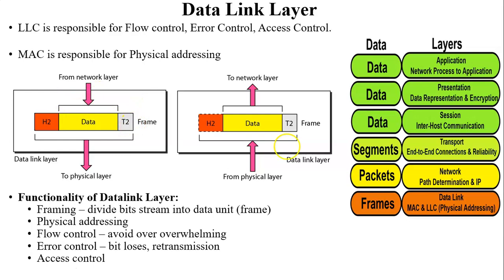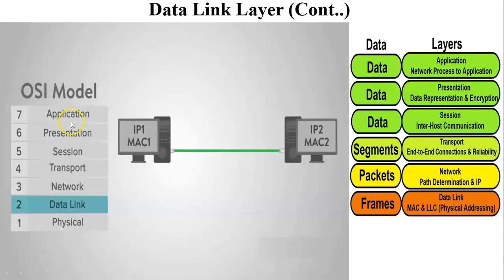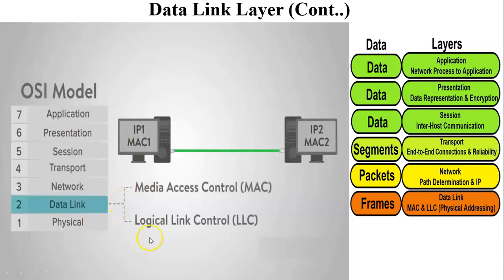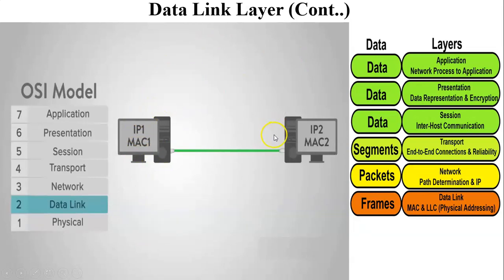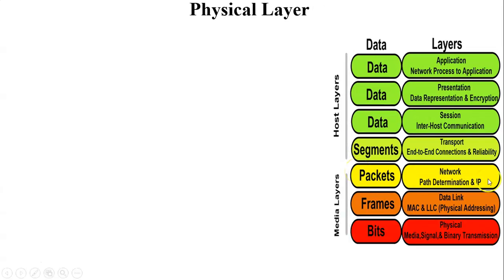The frame structure has two parts: MAC and LLC. The frame contains the source MAC address and destination MAC address in the header, and error control, flow control, and access control information in the trailer, and is then sent to the destination.